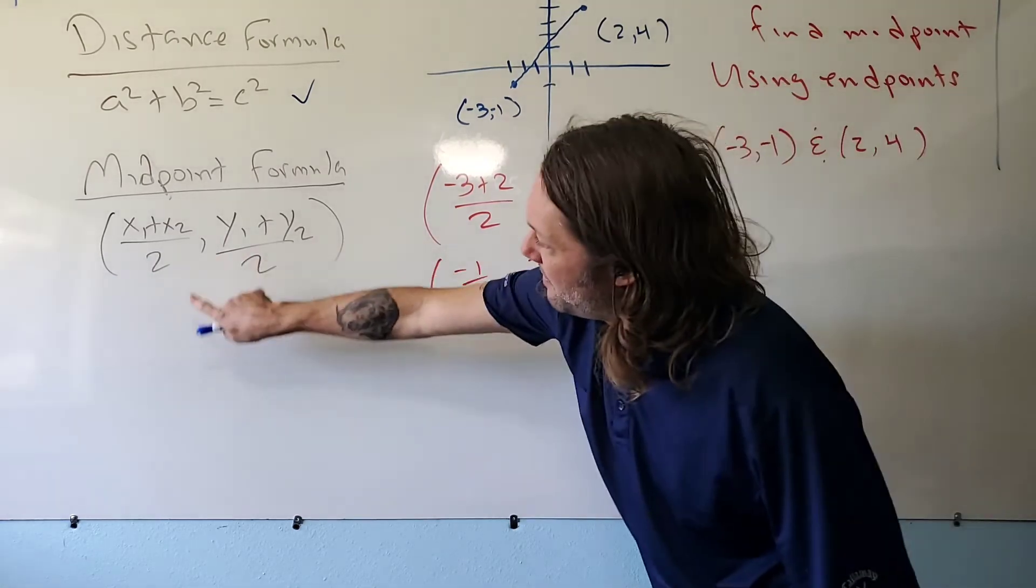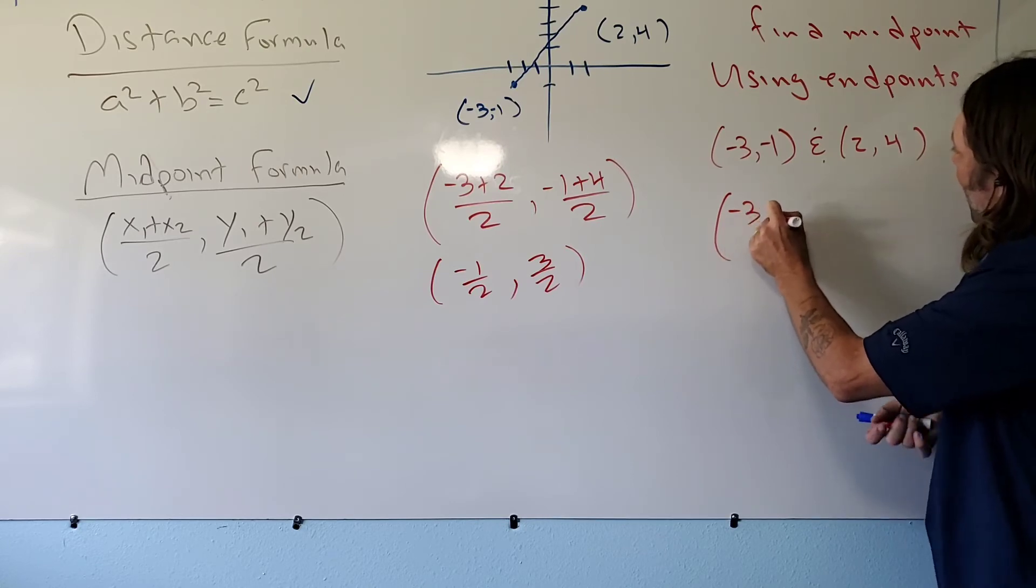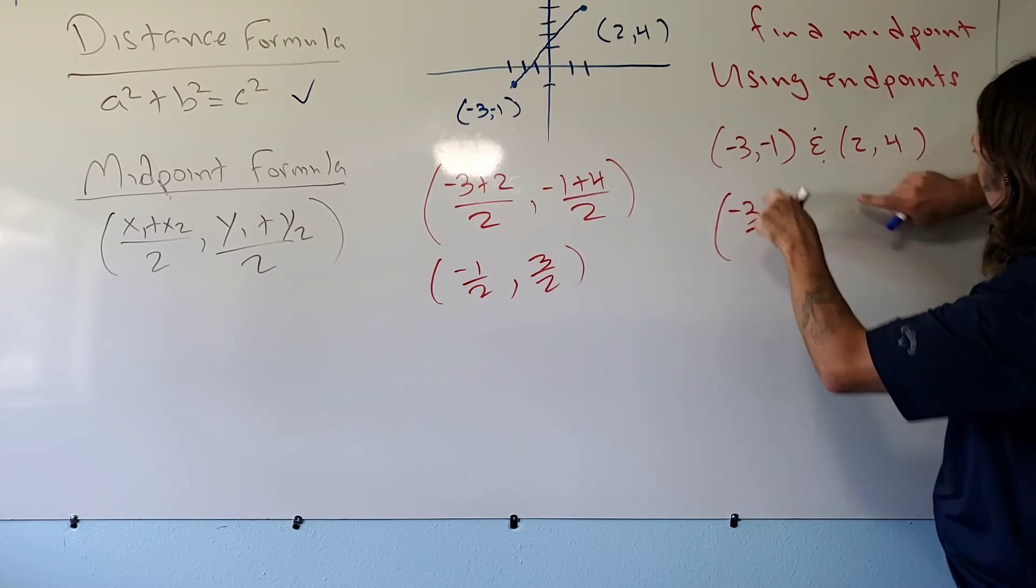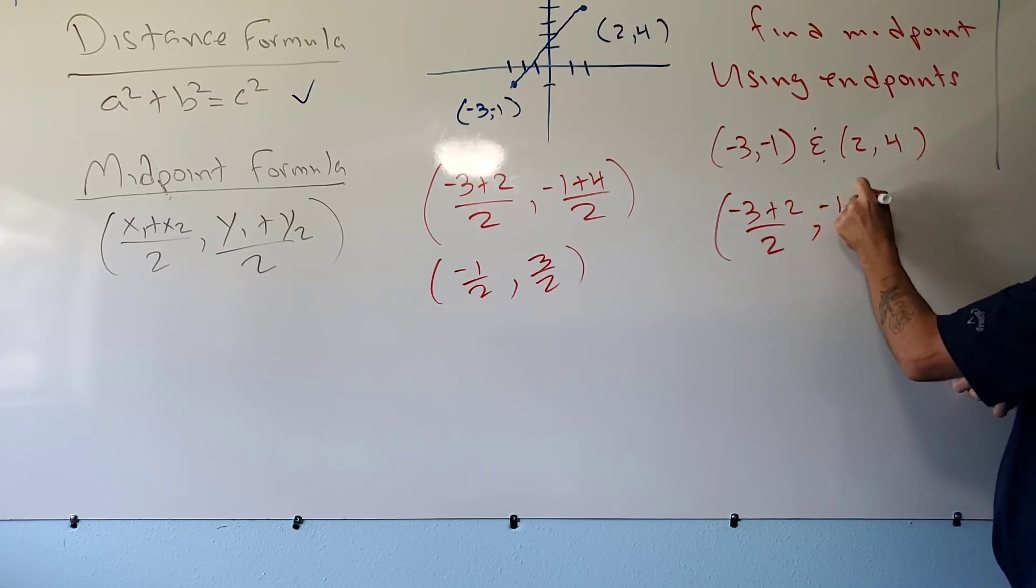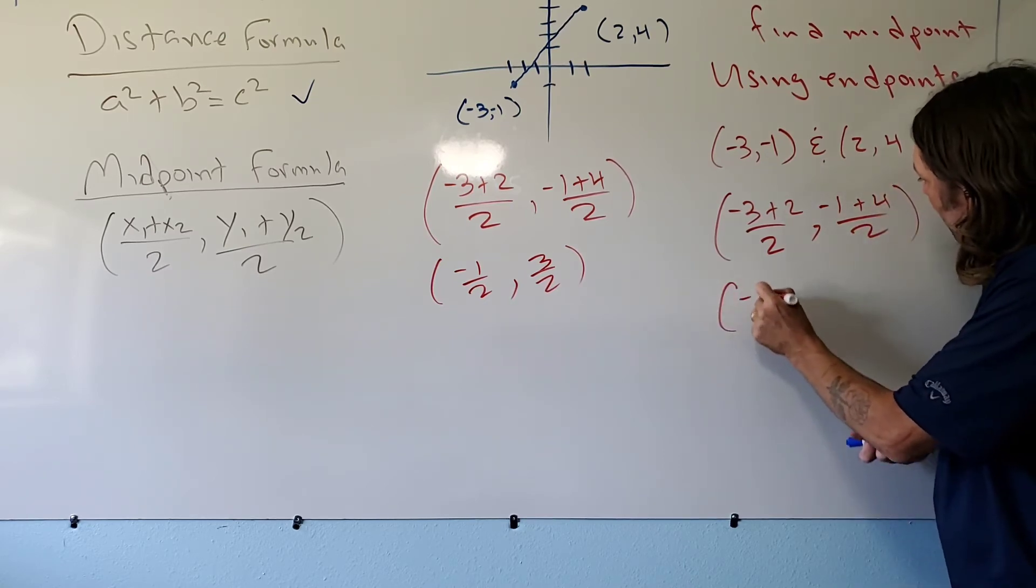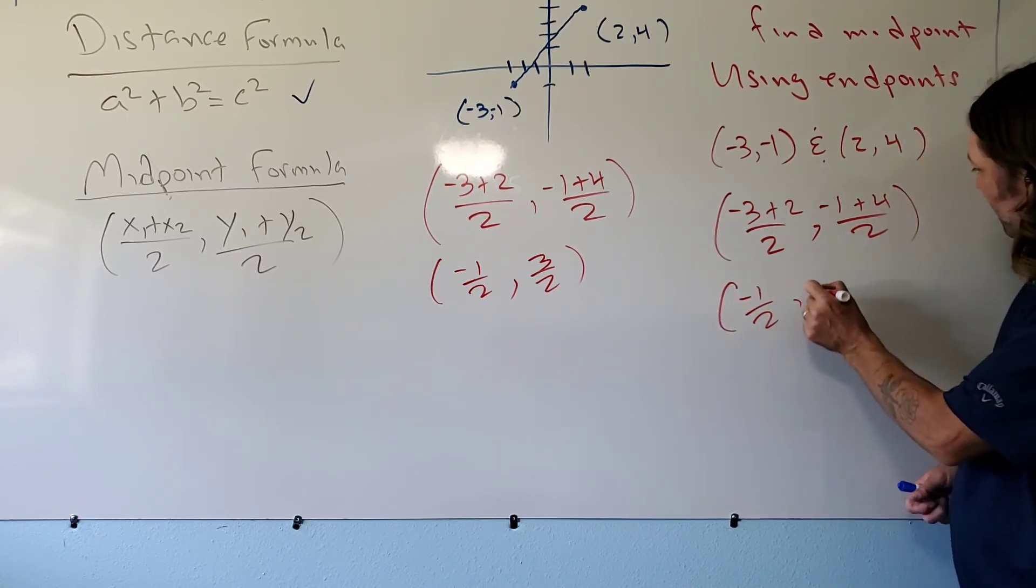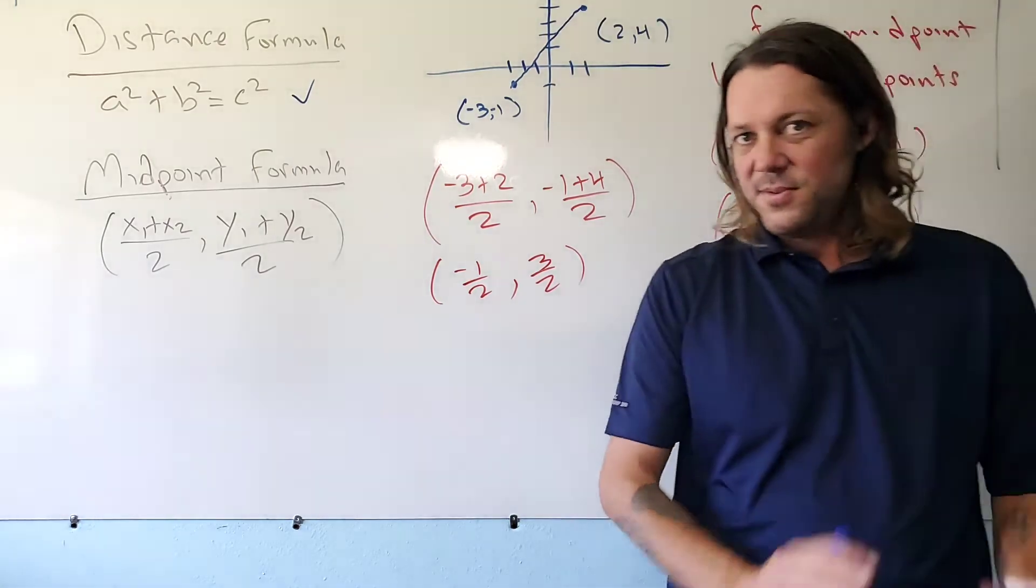And so I literally just do exactly what I did before. Those are my x values, those are my y values. I plug them into my formula, so it's going to become minus three plus two—those are my x values—I'm going to divide that by two, and then I'm going to add my y values, and then I'm going to divide that by two.